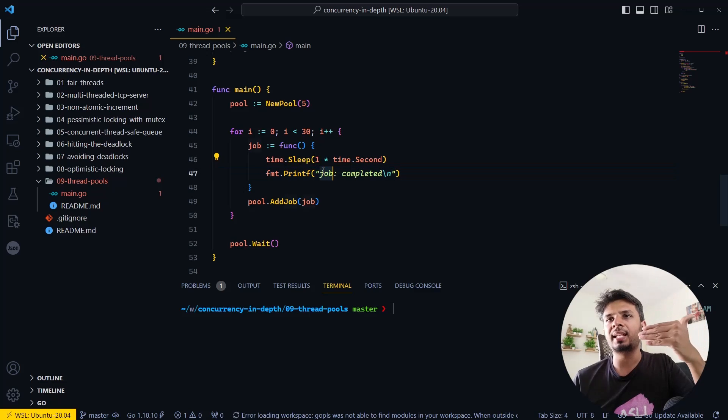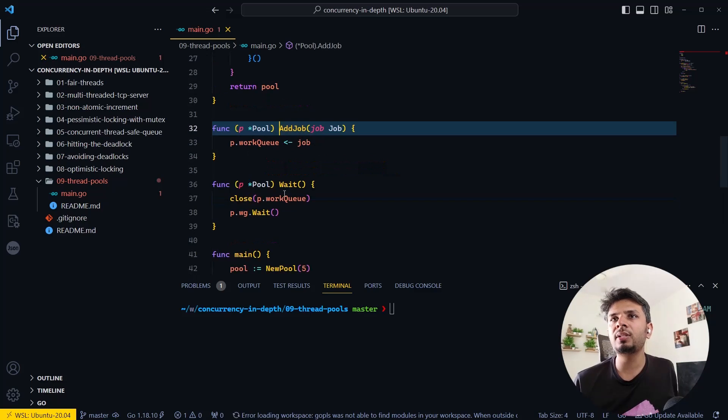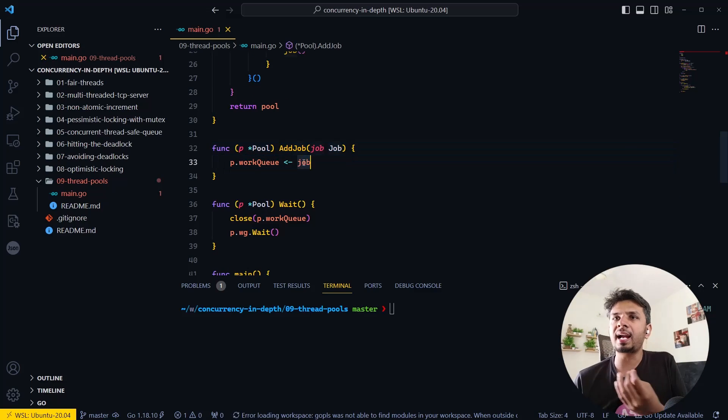I'm just mimicking a task or job in which I'm just sleeping for a second and then printing 'job completed'. I'm calling pool.add_job.